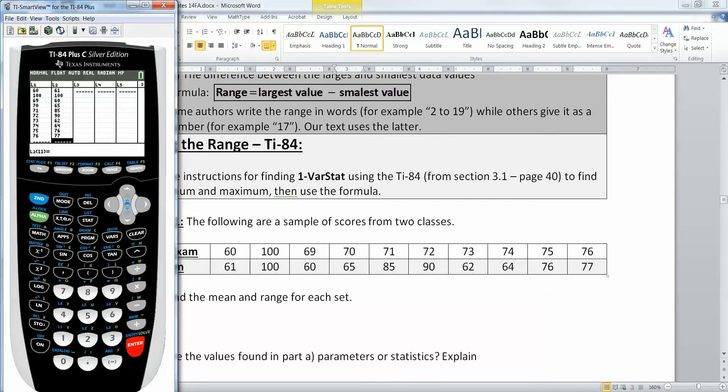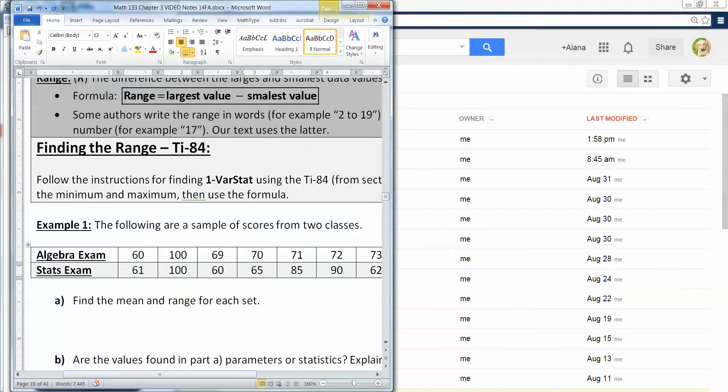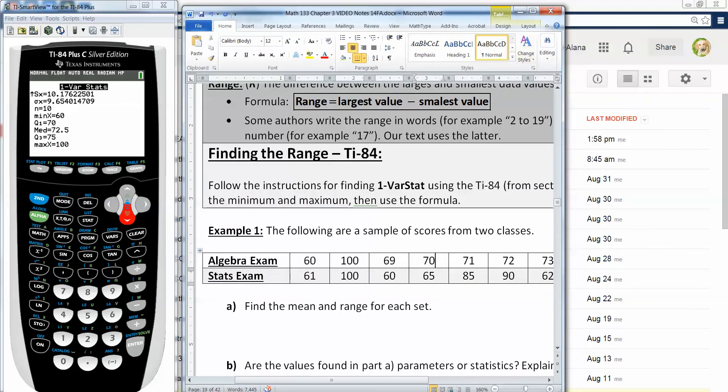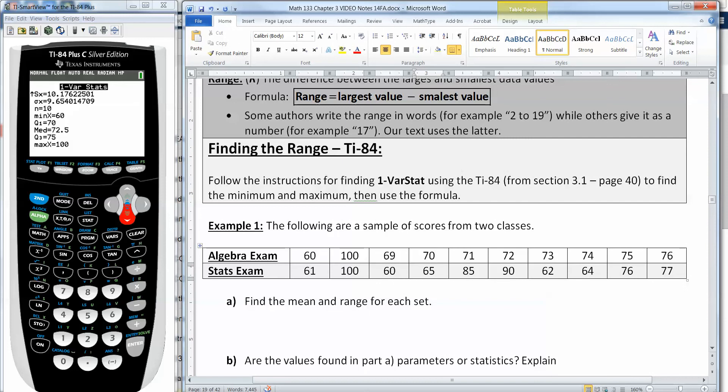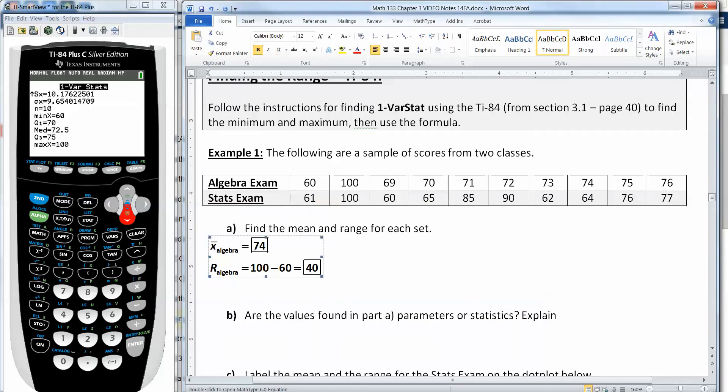Now how do you find the mean and the range? We already know how to find the mean. So let me go to stat, go to calculate, pick number one, one variable stat, and I'm going to do L1 right now. So second one, leave frequency list blank for now and go down to calculate and press enter. And there we have the mean of 74. Now the range is the highest minus the lowest. You can find it from the max minus the min. The max is 100, the min is 60. The mean for the algebra exam is 74 and the range is 100 take away 60, which is 40.